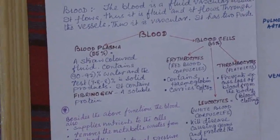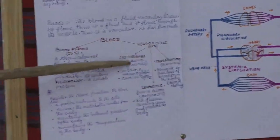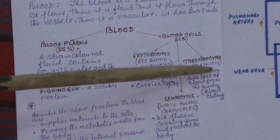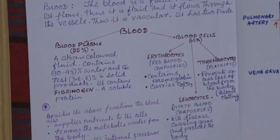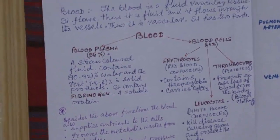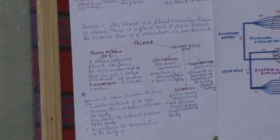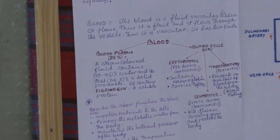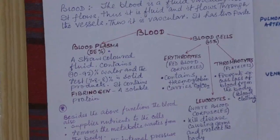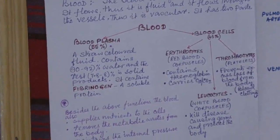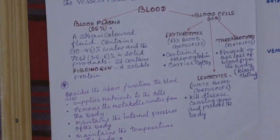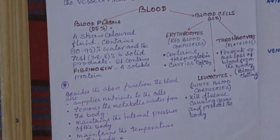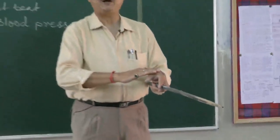There are three types of blood cells: erythrocytes, leukocytes, and thrombocytes. Erythrocytes contain hemoglobin and are biconcave discs — concave on both sides — so as to increase surface area for taking up more oxygen. Leukocytes, the white blood cells, protect the body by killing disease-causing germs. Thrombocytes, the platelets, have the property to clot the blood so as to prevent excess loss of blood from the body — normally when we get a cut, blood keeps flowing out.